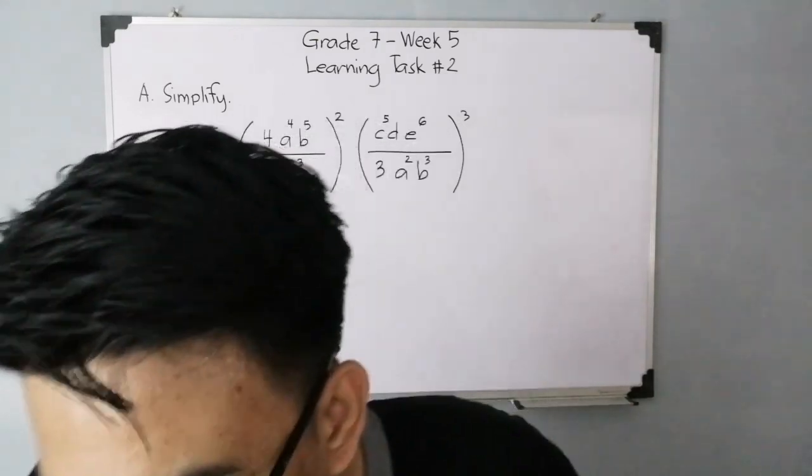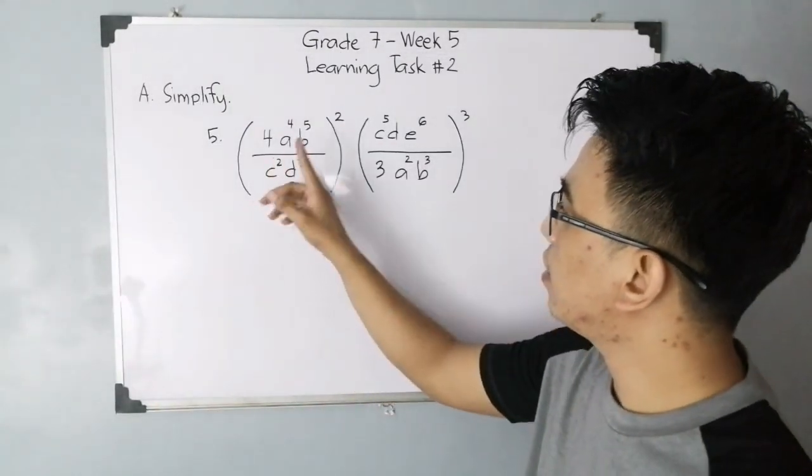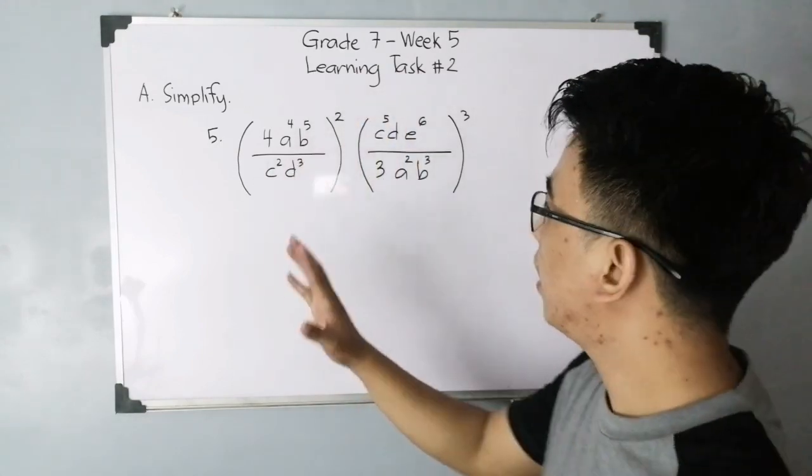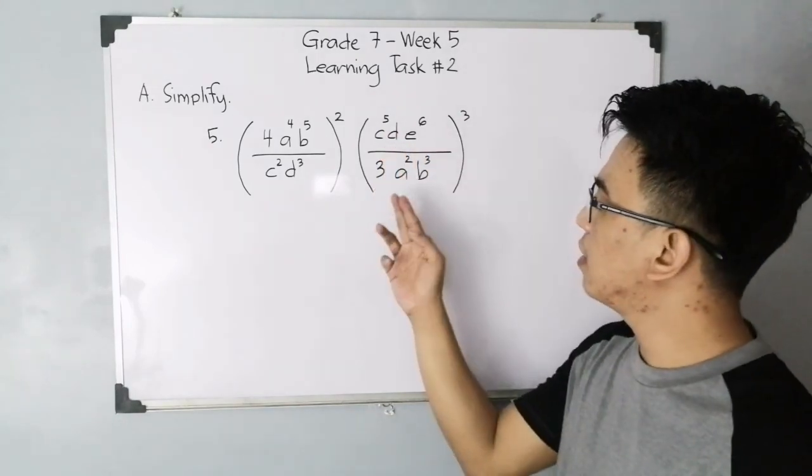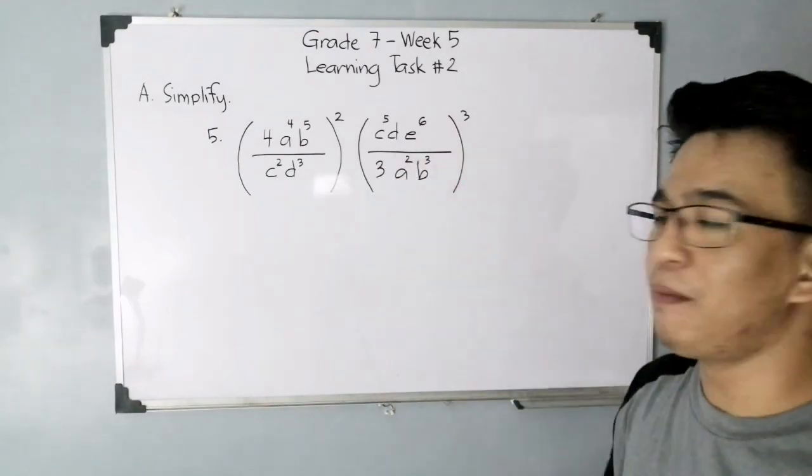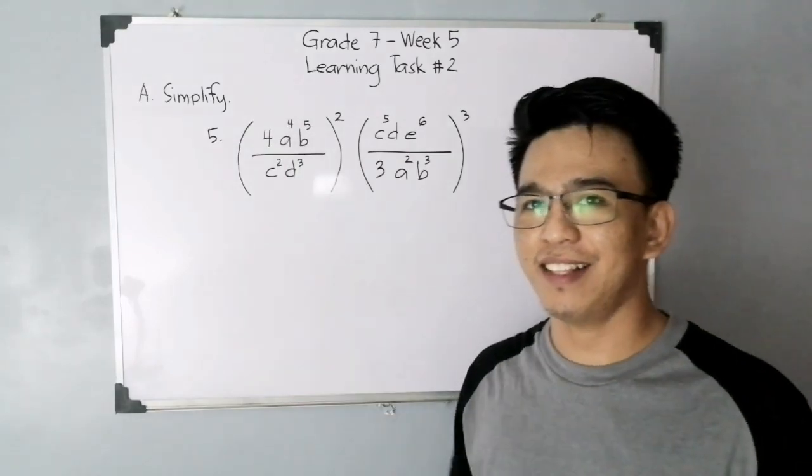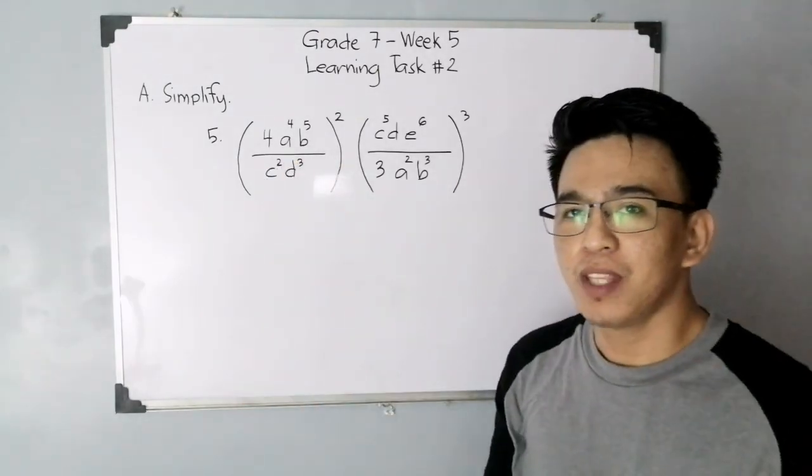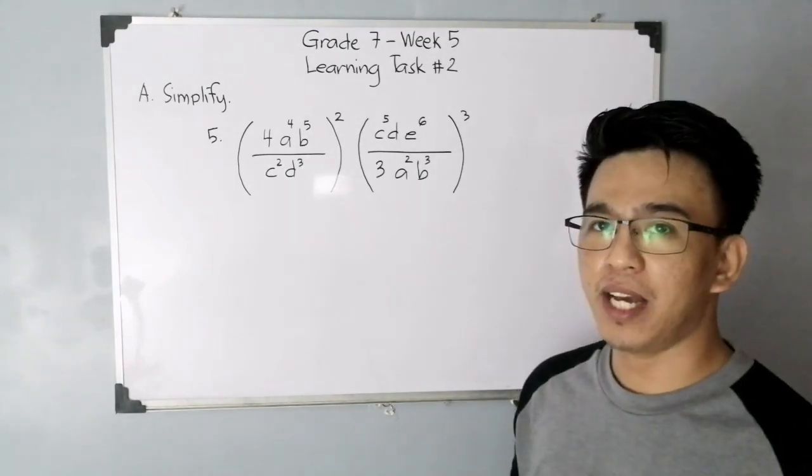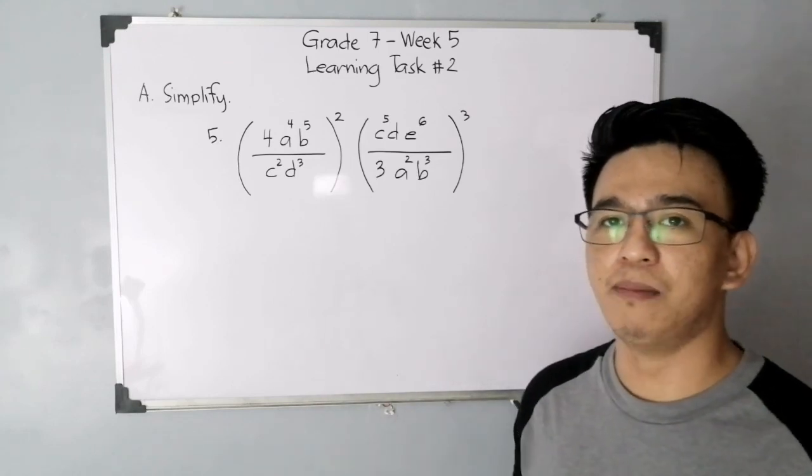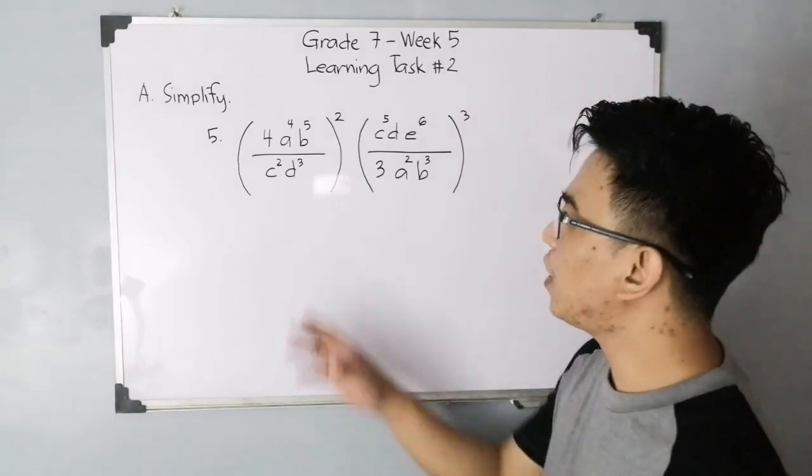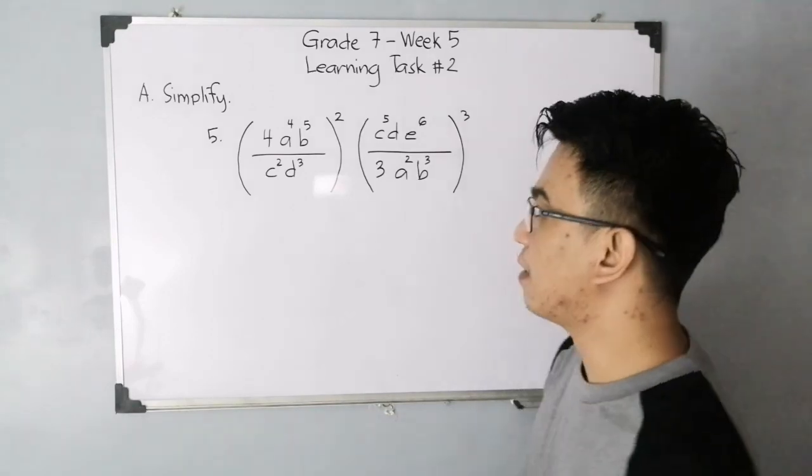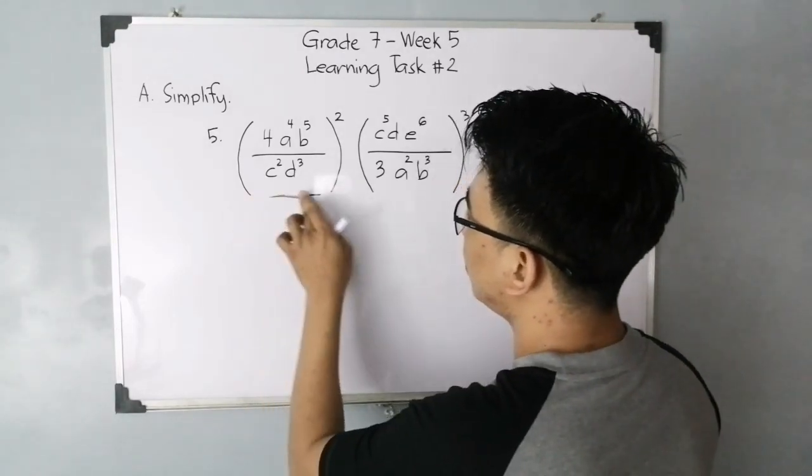Now for item number 5, guys, we have here the expression: the quantity of 4 a raised to 4 b raised to 5 over c raised to 2 d raised to 3, raised to 2, and then times the quantity of c raised to 5 d e raised to 6 over 3 a raised to 2 b raised to 3, raised to 3. You can see that this part is hard to look at or solve. And then we have another product here where we need to multiply them after we simplify. We'll do this one by one. We'll skip one step, but the concept is the same and we'll still get the correct answer.